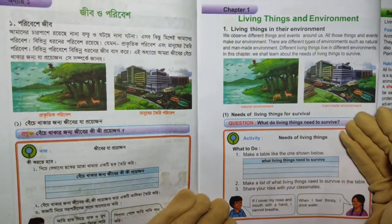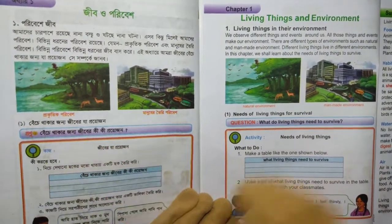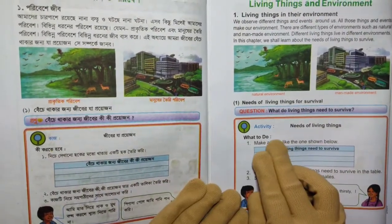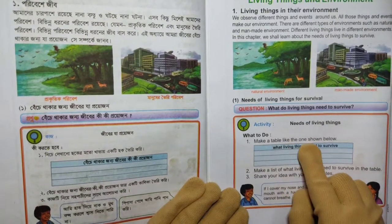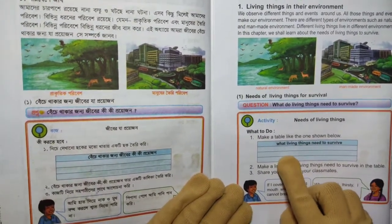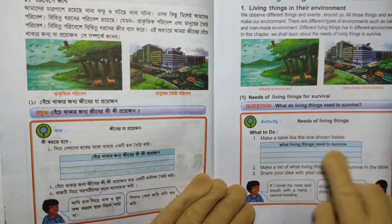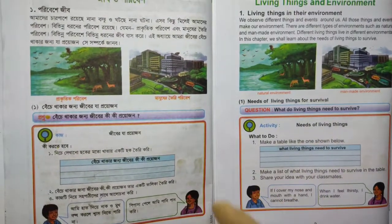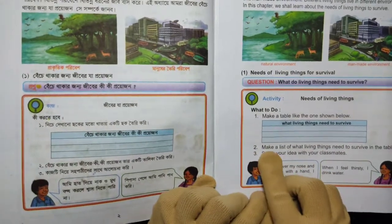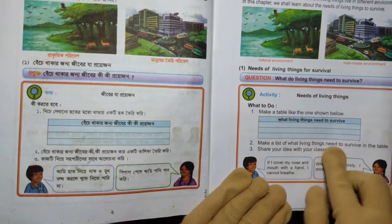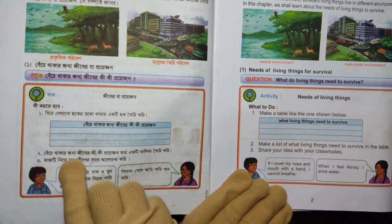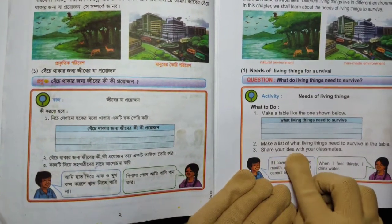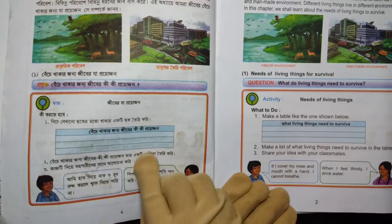Activity: Needs of Living Things. What to do? Number 1 — make a table like the one shown below in your notebook. Draw the table as shown and fill it in accordingly.